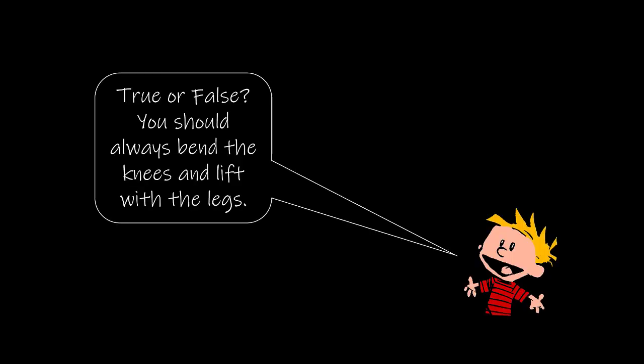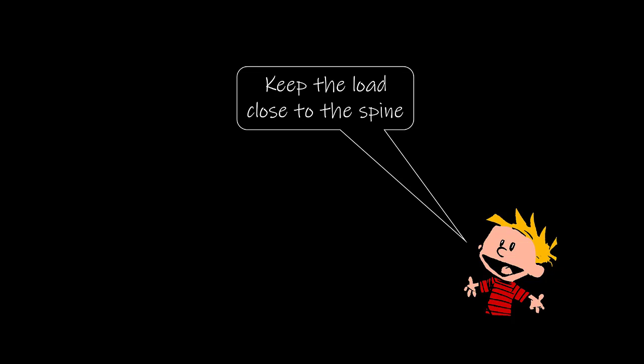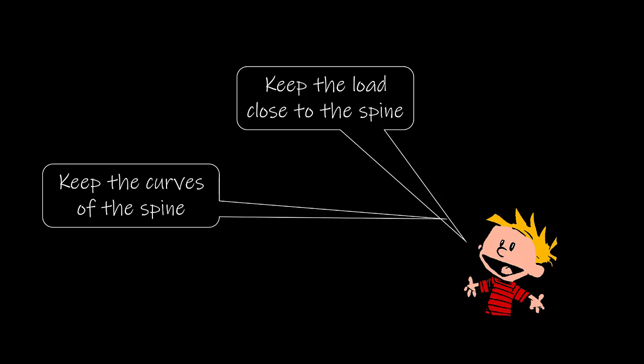Now, with that said, let's talk about a few different lifting techniques. Before doing so, it's important that we cover two rules to lift safely, which I'll discuss in the context of a true or false question: you should always bend the knees and lift with the legs. The two rules for lifting safely are: one, keep the load close to the spine — if we keep the load close to the spine, we decrease the moment arm of that load about the spine; and two, keep the curves of the spine, because the natural curvature of the spine is the position in which the spine can handle compressive loads the best.